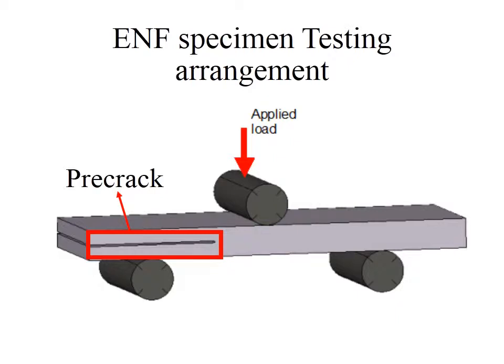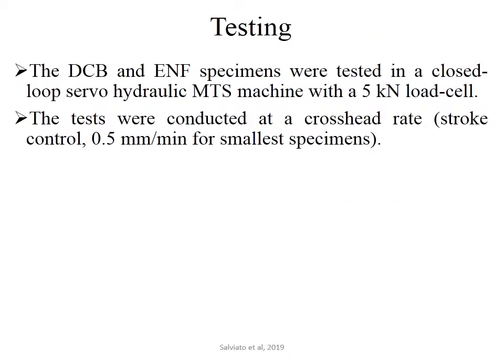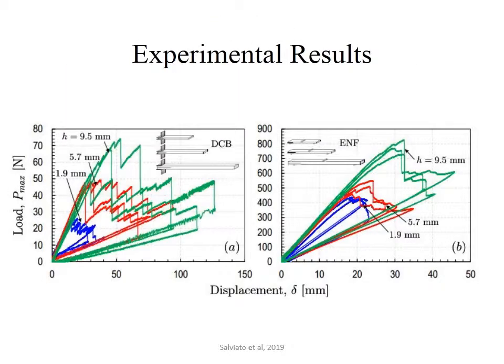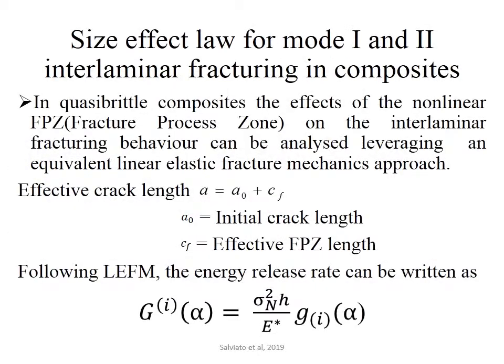The pre-crack is introduced by inserting a 10 micrometer Teflon film during the lamination process. All tests were conducted at a crosshead rate of 0.0 mm per minute for the small specimen. This gives the load-deflection curves for DCB and ENF specimens.